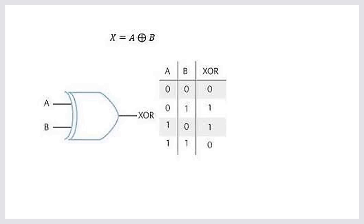Before considering the half adder, let's consider the operation of the XOR gate. This is the truth table of the XOR gate. In the XOR gate, if two similar inputs A and B are there, then the output becomes zero — for example, one and one gives zero. For dissimilar inputs, the output becomes one. This XOR gate represents binary bits addition.